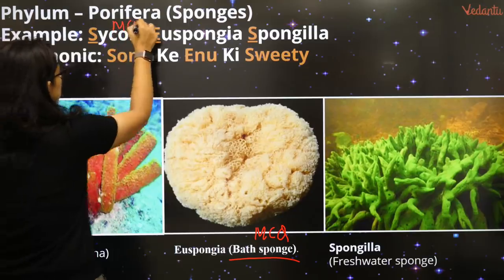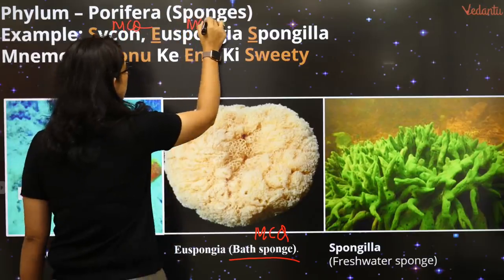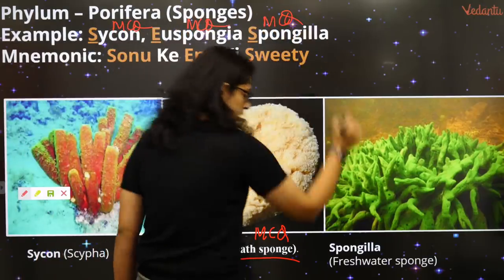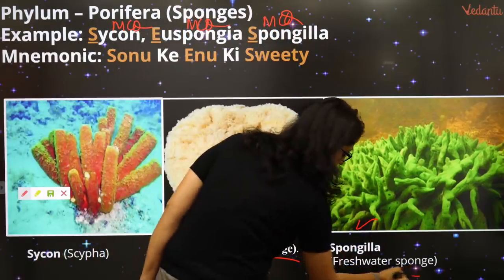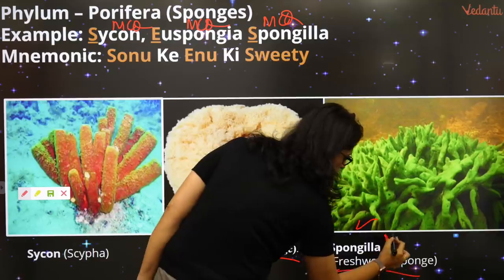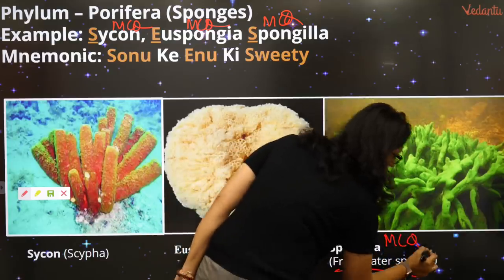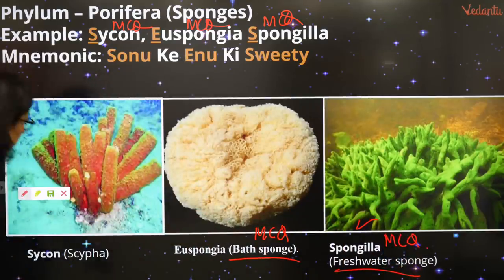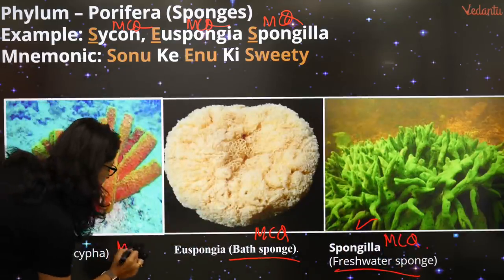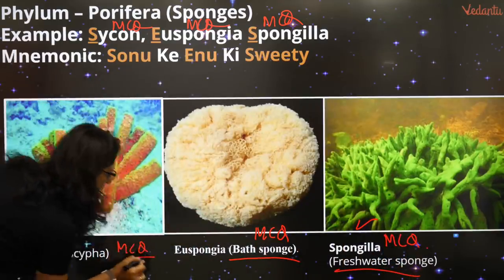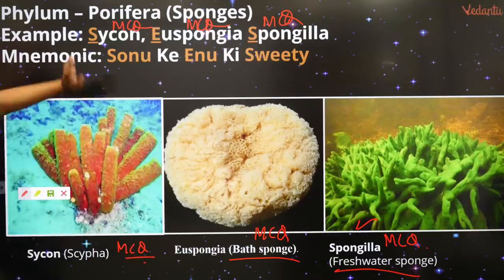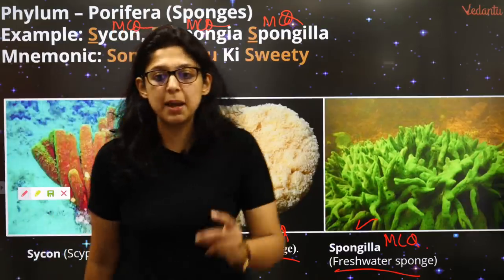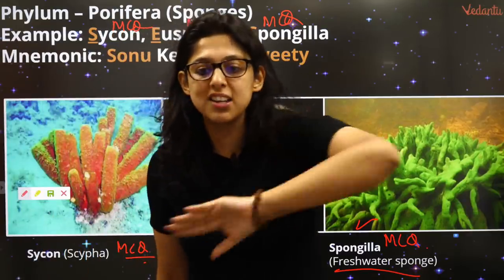Spongilla is a freshwater sponge — MCQ! Sweetie = Spongilla. So we have Sycon, Euspongia (bath sponge), Spongilla (freshwater sponge) — that's six MCQs in one class, done!